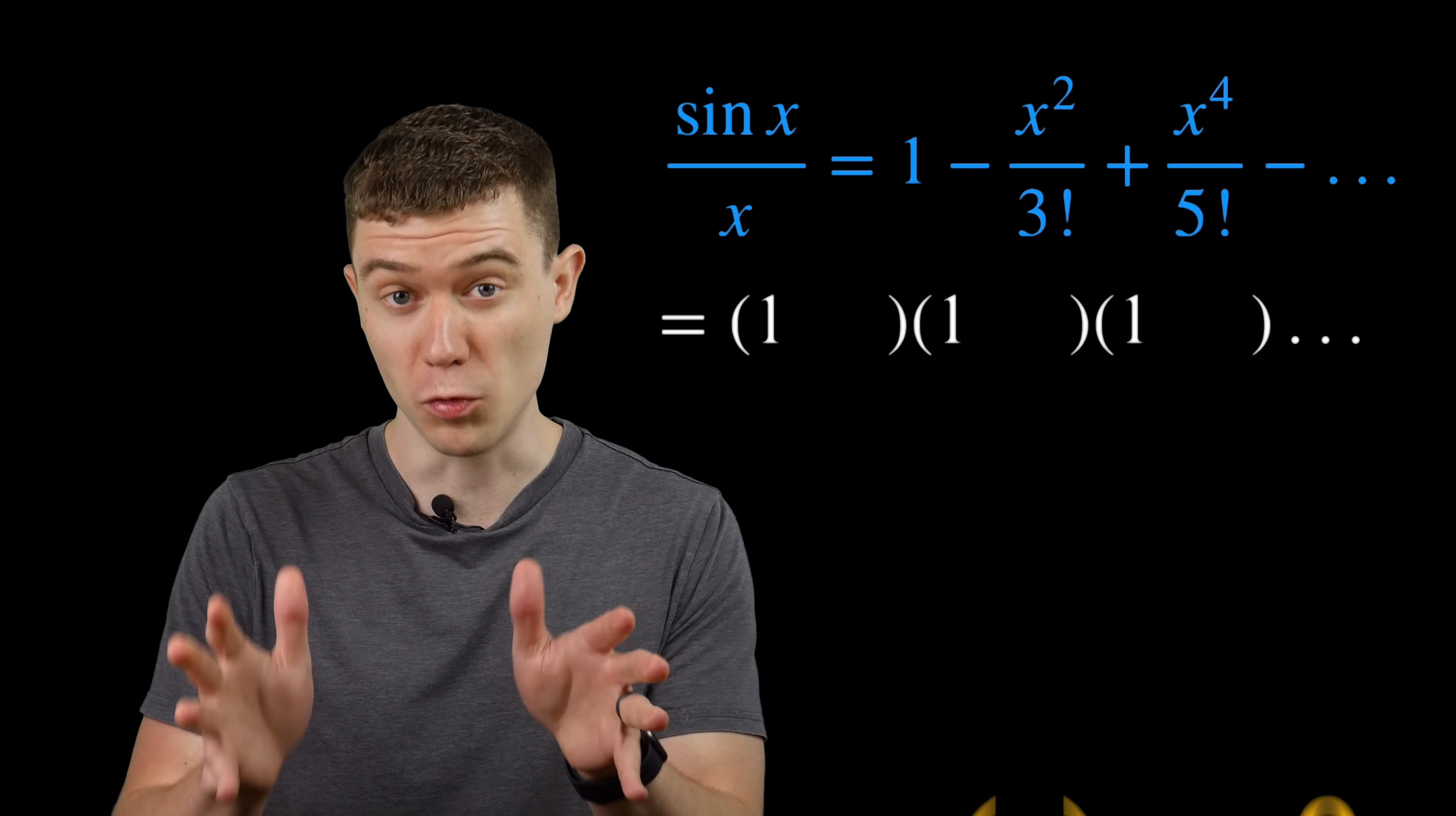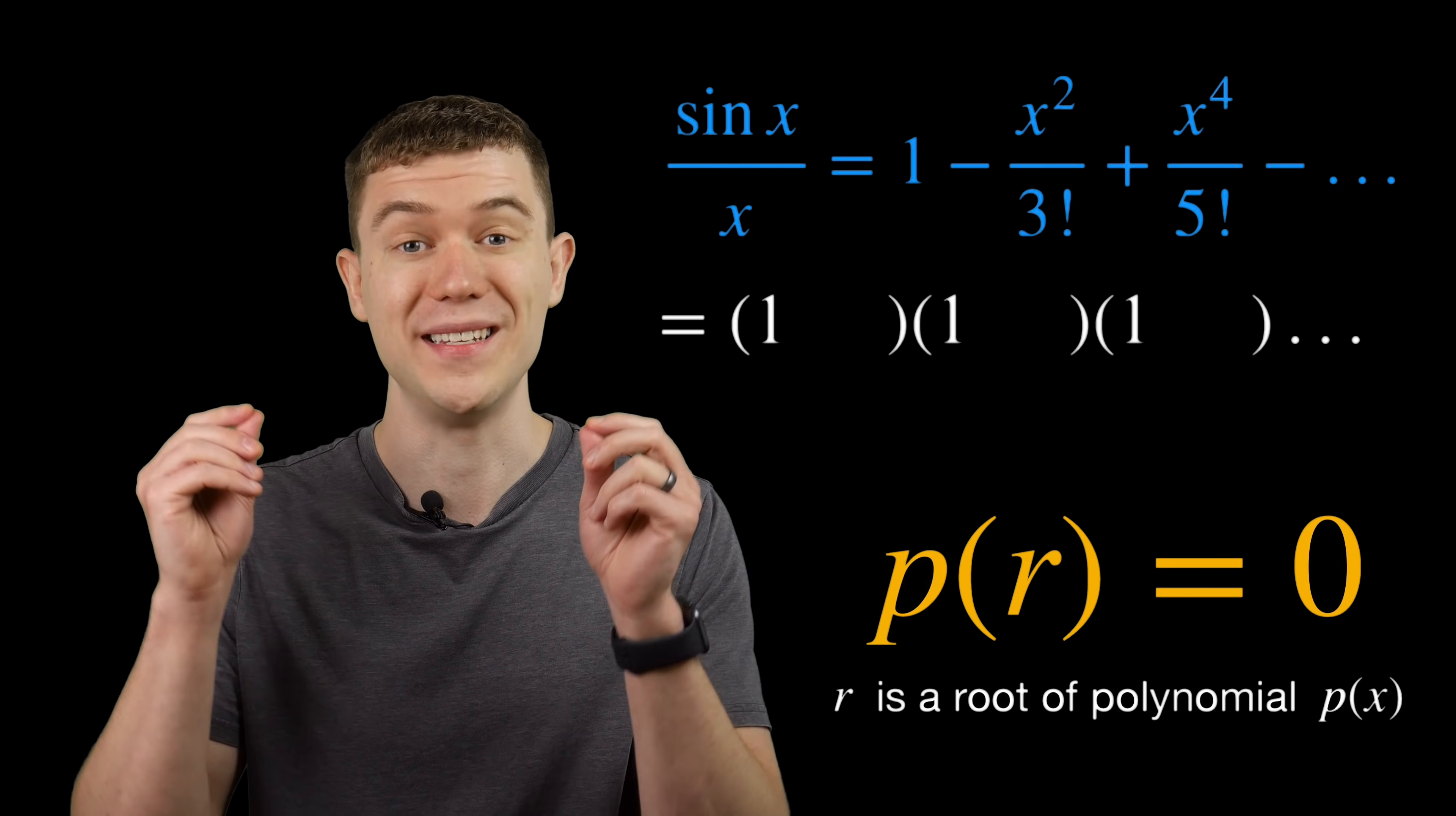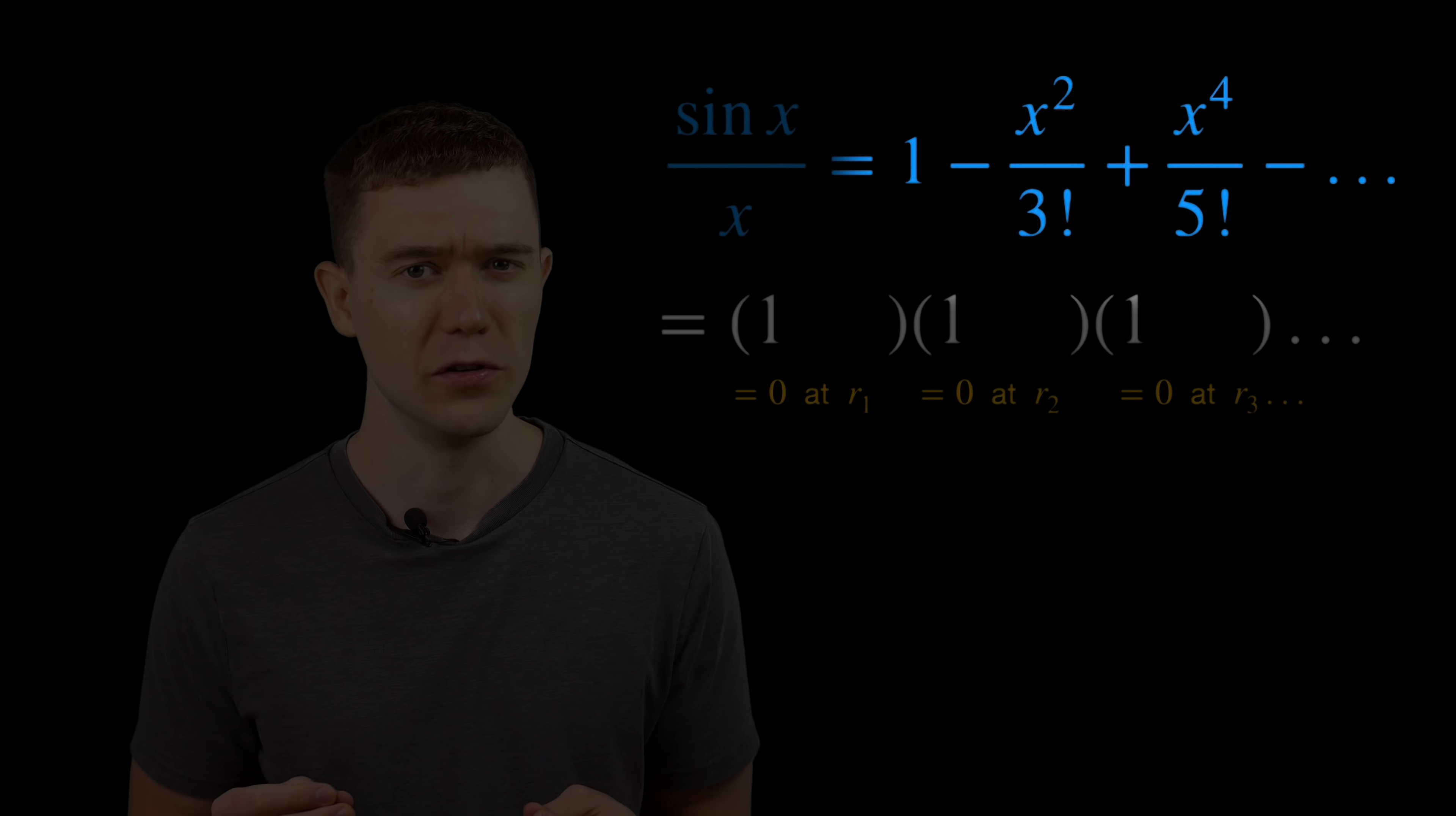And we know when we plug in the roots, the zeros of the polynomial for x, it should be 0. So each factor should be 0 at one of the roots. What are the roots of this polynomial?